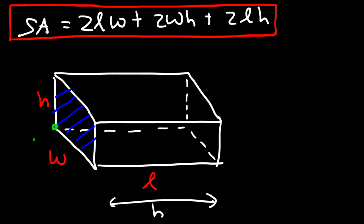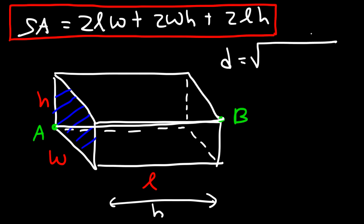The diagonal length between two opposite corners of a rectangular prism is the square root of W squared plus H squared plus L squared. There's another video explaining how to derive that formula, but this is the formula you need to find the diagonal length of a rectangular prism.